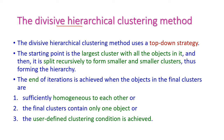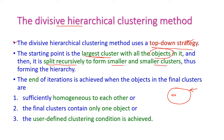The divisive hierarchical clustering method uses a top-down strategy. The starting point is a large cluster containing all the data objects. Then it splits progressively into smaller and smaller clusters. Based on the similarity between the data, similar data is split out — this cluster is split separately, and again further split separately. This is the top-down strategy.